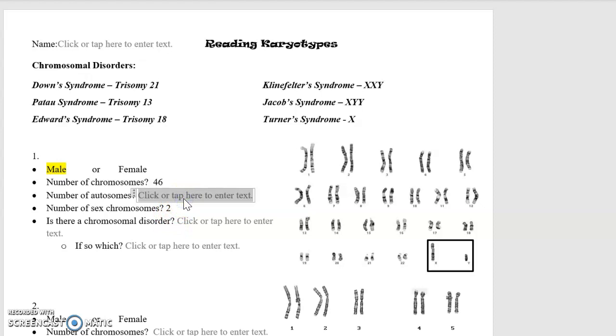That means all the rest are autosomes. Well, 46 minus two is 44. So you could figure this out a couple ways. You could do the math in your head that I just did. You could physically count all of your autosomes, or you could look that you have one through 22, so 22 sets, two in each of those, that's 44.